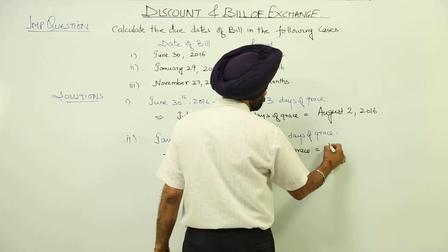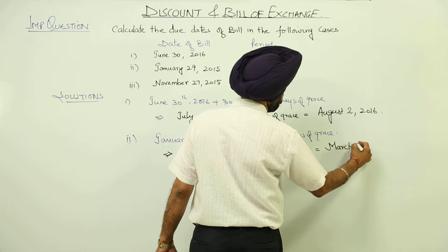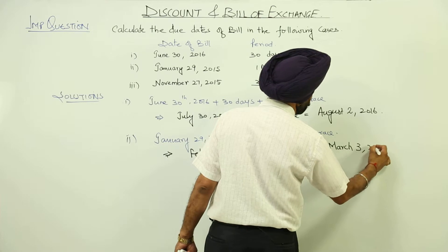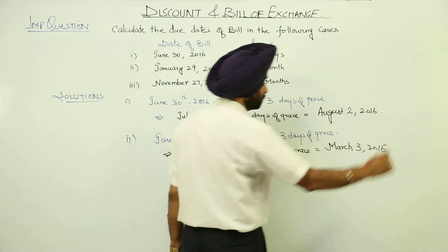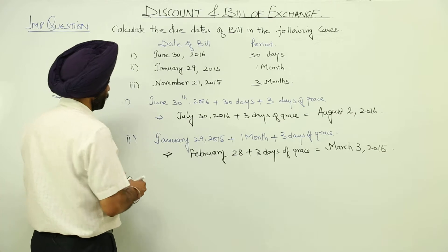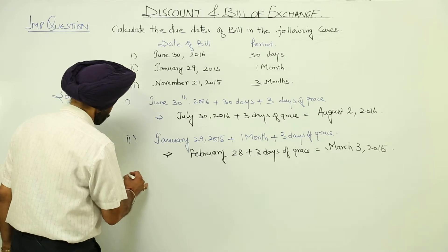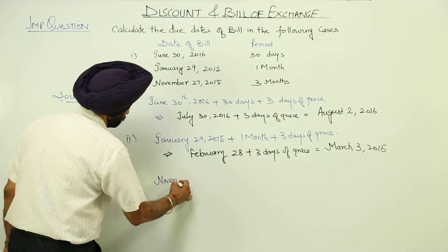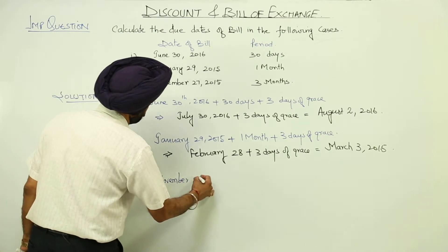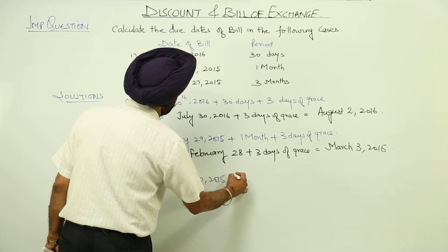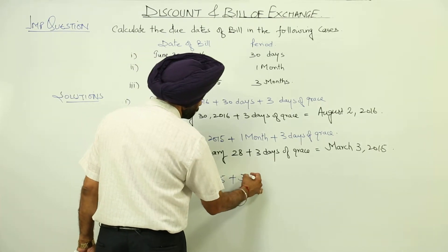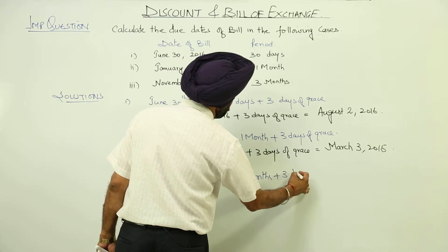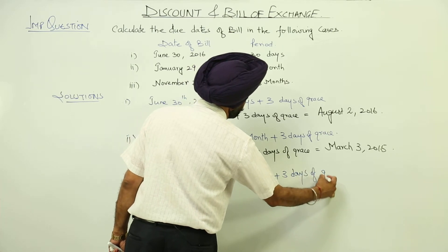This is equal to March 2nd, 2015. Now third part: November 27th, 2015, plus 3 months, plus 3 days of grace.